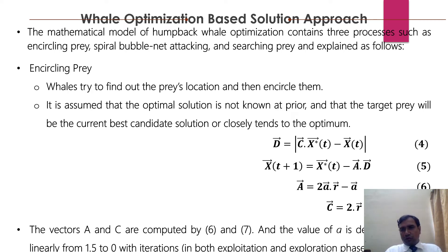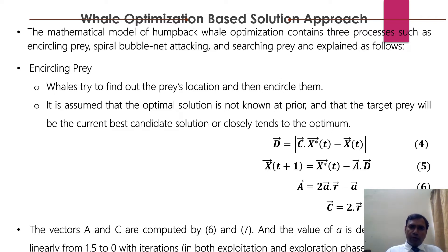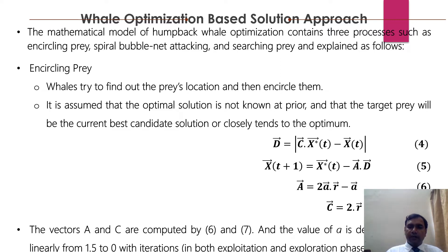The whale optimization-based solution approach: the mathematical model of the humpback whale optimization contains three processes — encircling prey, spiral bubble net attacking, and searching prey. For encircling prey, whales try to find the prey's location and encircle them. It is assumed that the optimal solution is not known to the whale prior to finding the target. Using equations 4, 5, 6, and 7, they find the best candidate solution, where A and C are computed by equations 6 and 7, and the value of A decreases linearly from 1.5 to 0 over iterations.